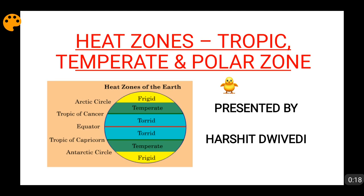Before watching this video, you should know about some important latitudes: the equator, which is zero degree latitude. Then the tropic of cancer at 23 and a half degrees north, and the tropic of Capricorn at 23 and a half degrees south. Similarly, the arctic circle and the antarctic circle are at 66 and a half degrees north and south respectively. According to these latitudes, the zones are being created.